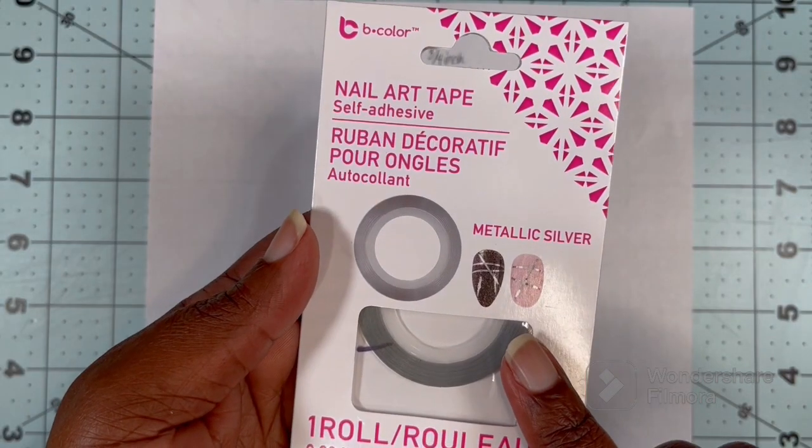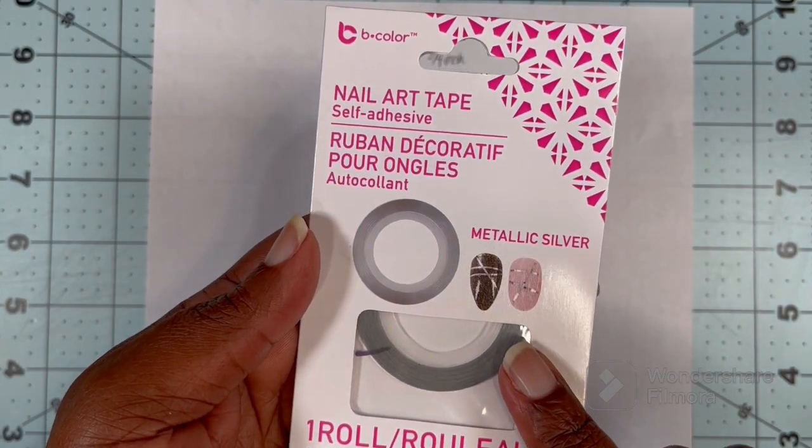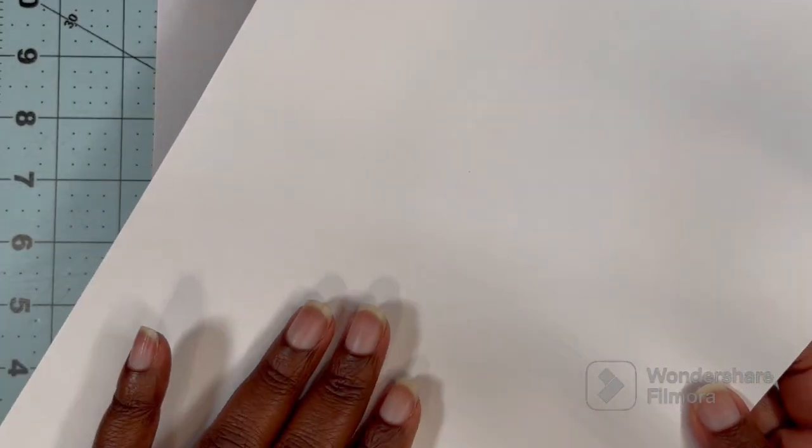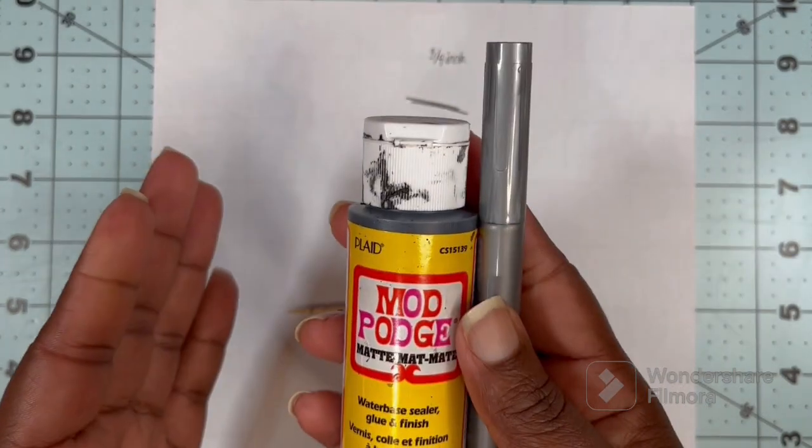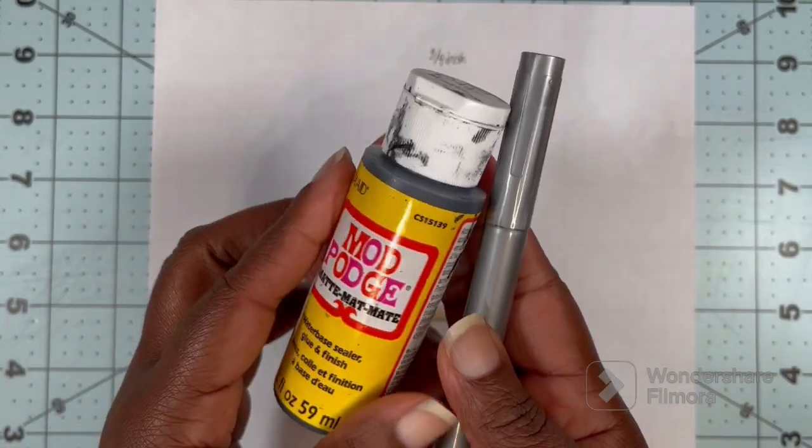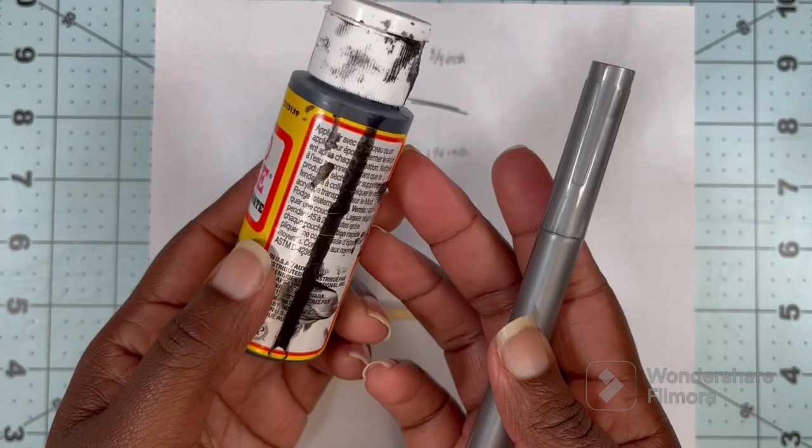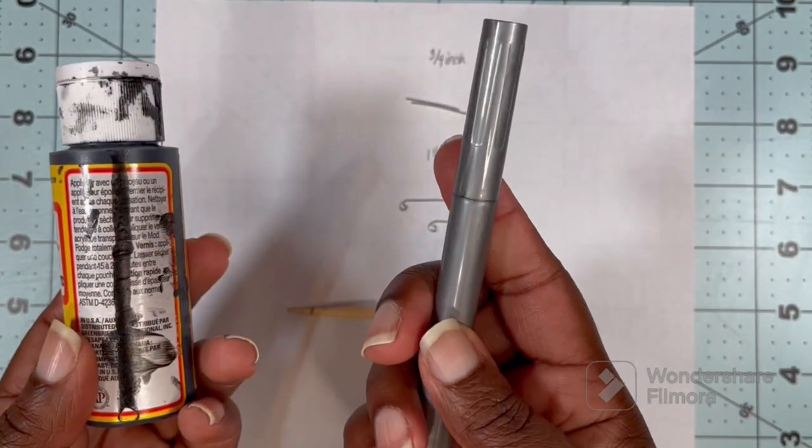I'm also going to use this nail art tape from the Dollar Tree, the metallic silver, and I'm using just plain cardstock, my glue gun, and some paint. I'm using my black paint and Mod Podge mixture and a silver paint pen from the Dollar Tree.